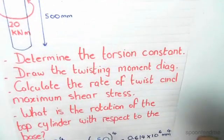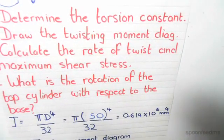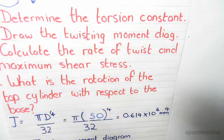So how do we begin? We need to start by finding the torsion constant. Recalling, torsion constant equals π times diameter to the power of 4 divided by 32.